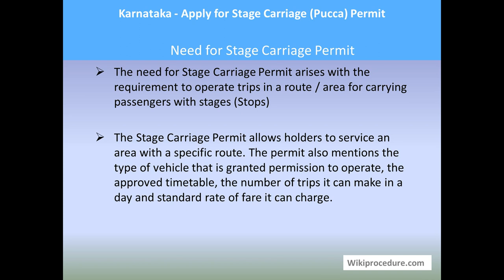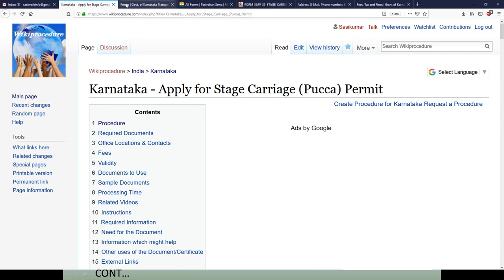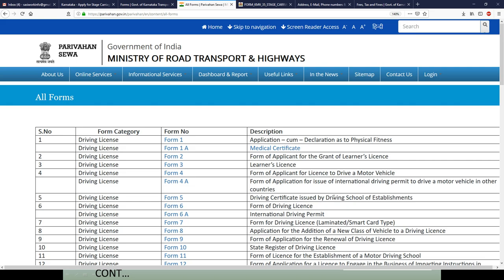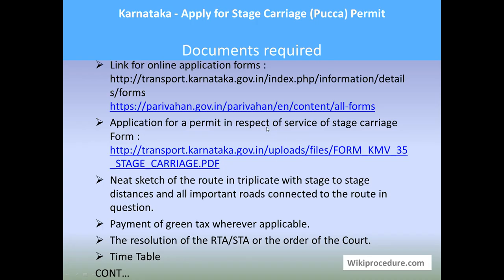For documents required, you need to get Application Form 35, which is provided via the link directly. We have also provided two additional links to help you download the form. The first is the Government of Karnataka Transport Portal from where you can download the form, and the second is the Parivahan Forms Portal. There is also a Form 35 direct link page. Use these links appropriately to download, print, and fill the form for applying.